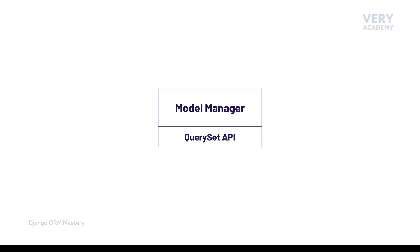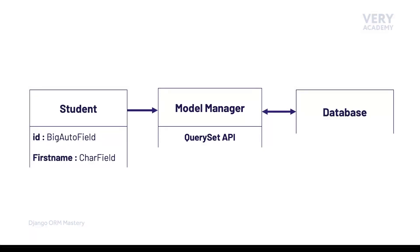The model manager as an interface provides access to the ORM query tools — the Query Set API — a topic which we will explore in the following tutorial — and database communication. Here's a basic visualization of the idea: on the left-hand side we have the Django model. We need to utilize the model information and interface with the ORM toolkit, the Query Set API, through the model manager. The Query Set API provides the toolkit for us to then build a query which can be executed on the database.